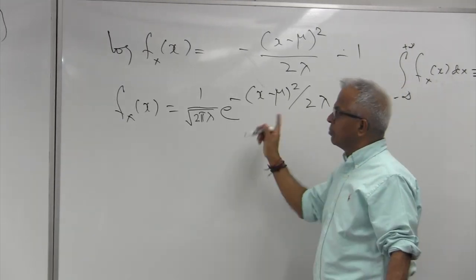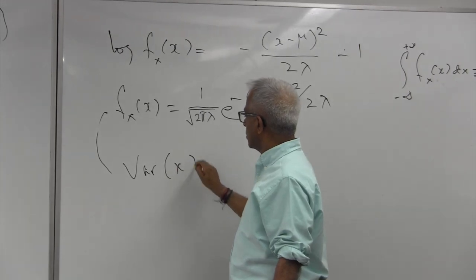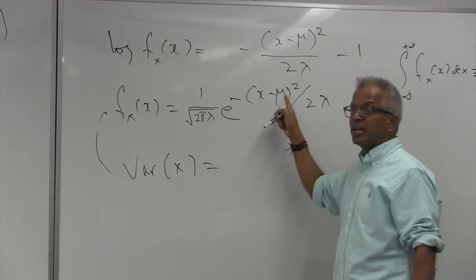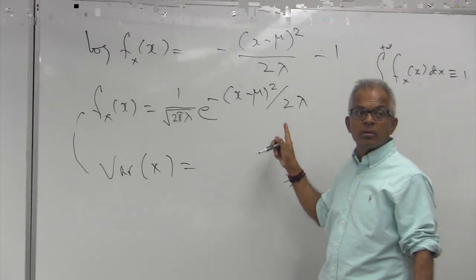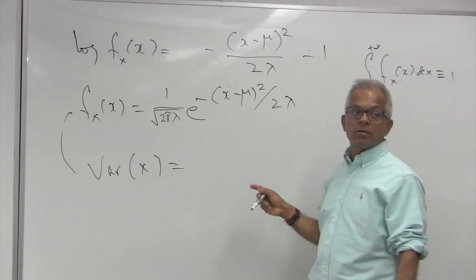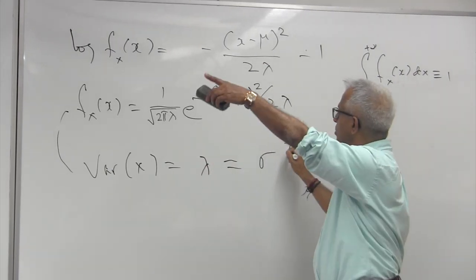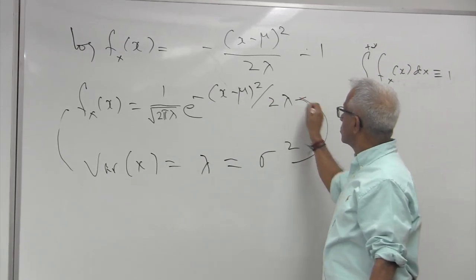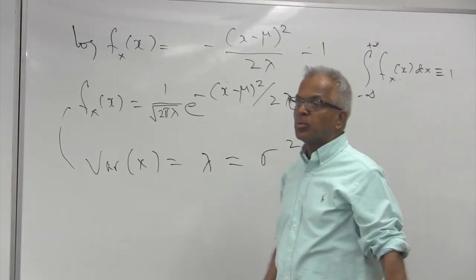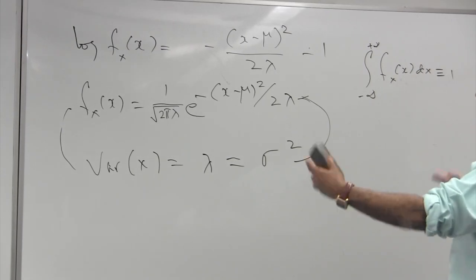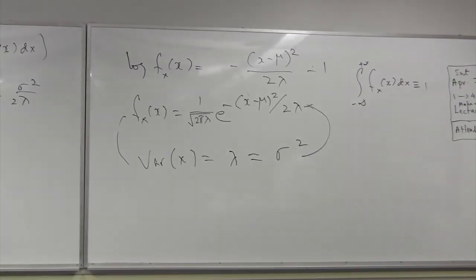But we also, what is the, from this expression, what is the variance of x? If this is the density function, what's the variance? Variance is, but that is given to be sigma square. So this goes here. Look at this, variance is given to be sigma square. So we form the unknown constant lambda of the Lagrange constant.